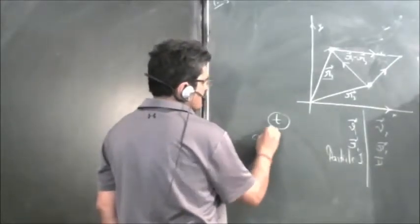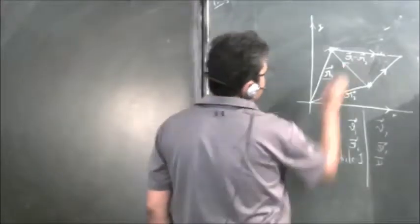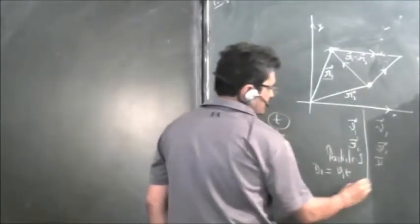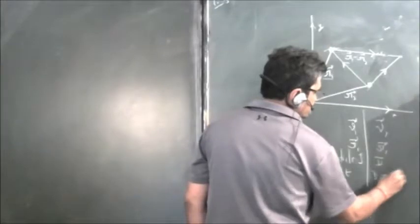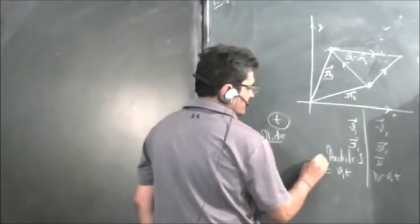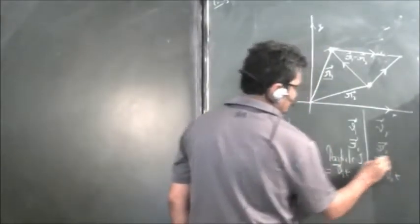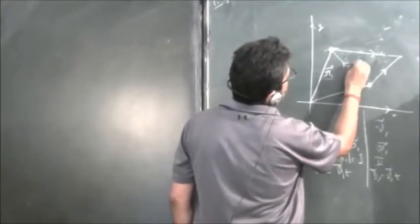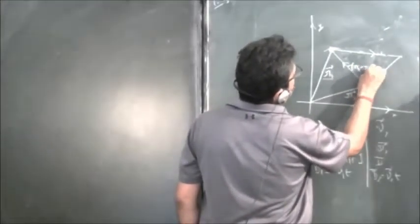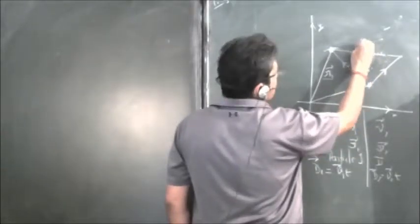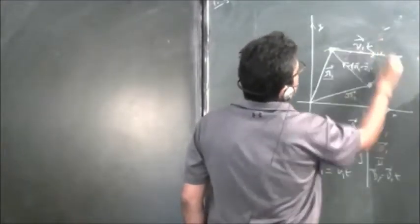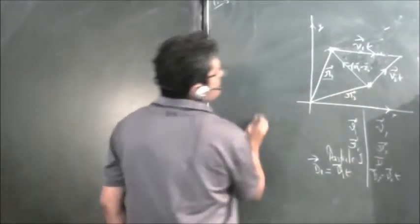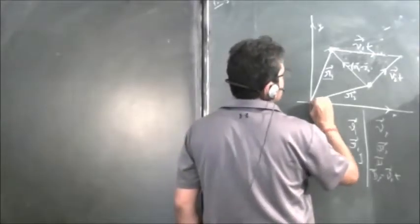The distance traveled by point 1 is d1 equal to v1·t, and d2 equal to v2·t. We can write these in vector form. So r1 minus r2 vector is this distance, v1·t vector is this, and v2·t vector is this.